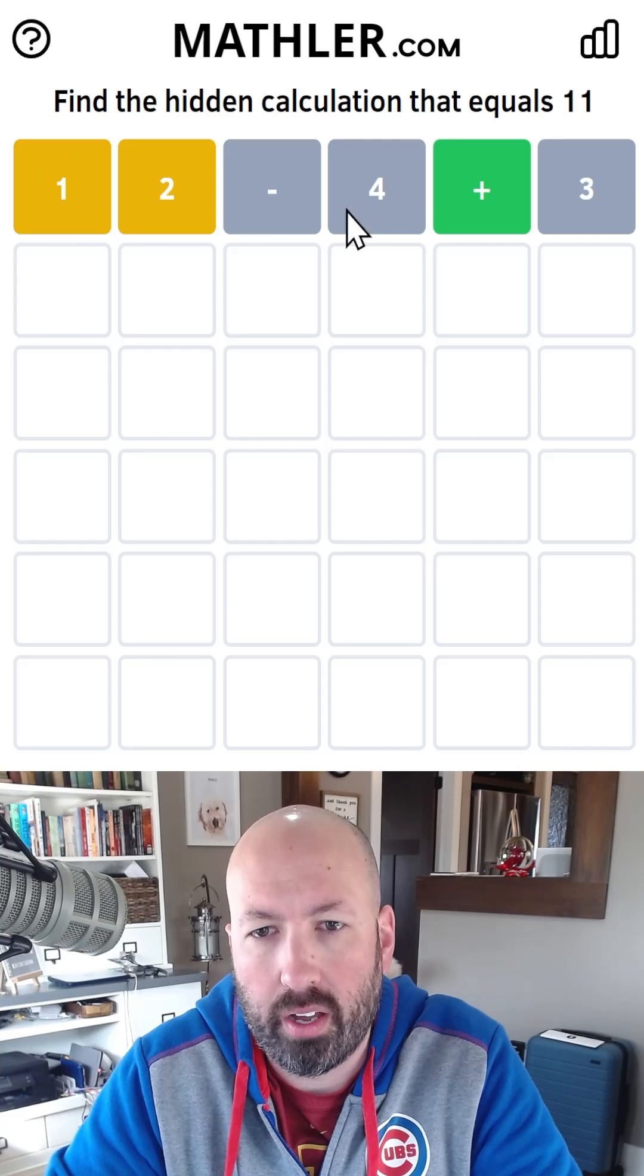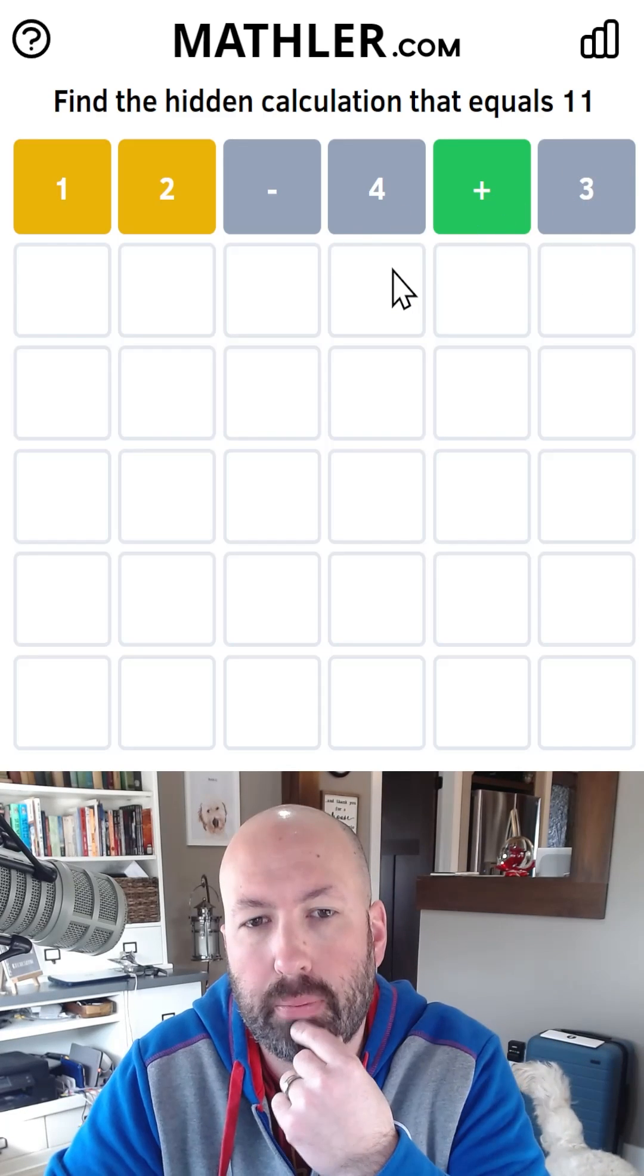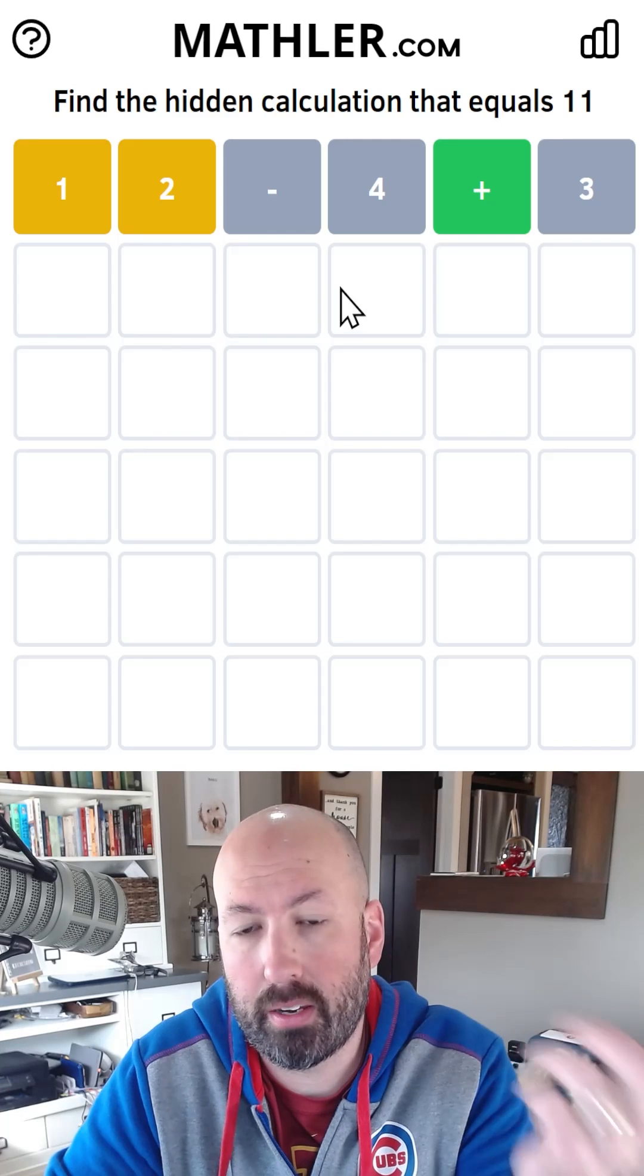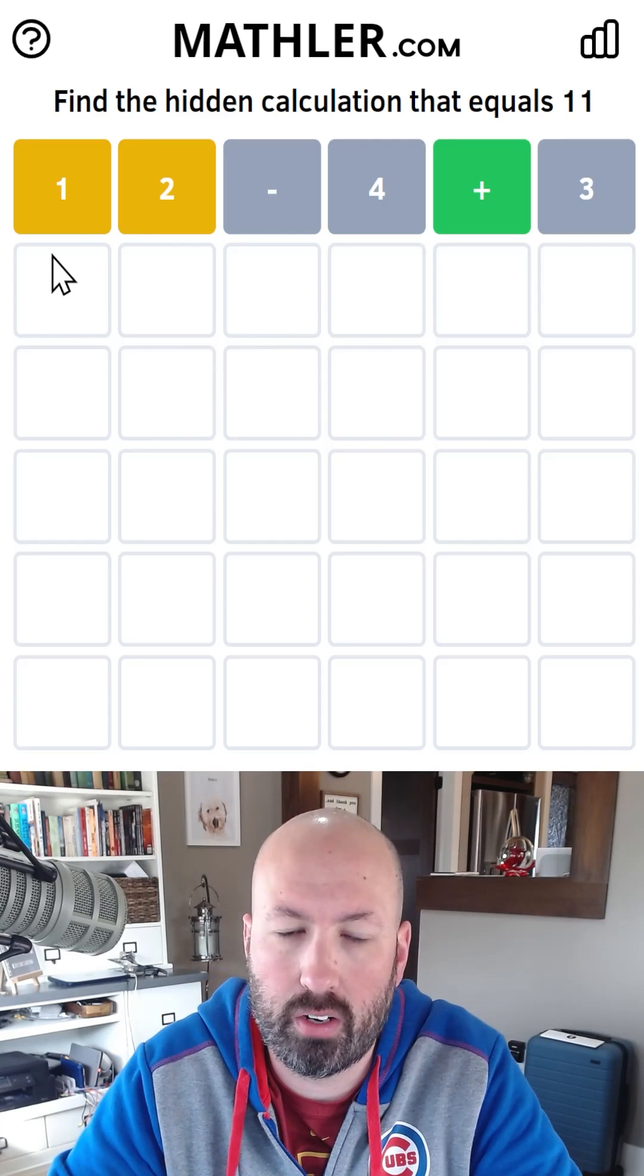We have to have a 1. Now, we could be adding 1 at the end if we divide to end up at 10. That's possible. We could do, like, 20 divided by 2 plus 1, but I don't really want to repeat the 2 right now if I don't have to.